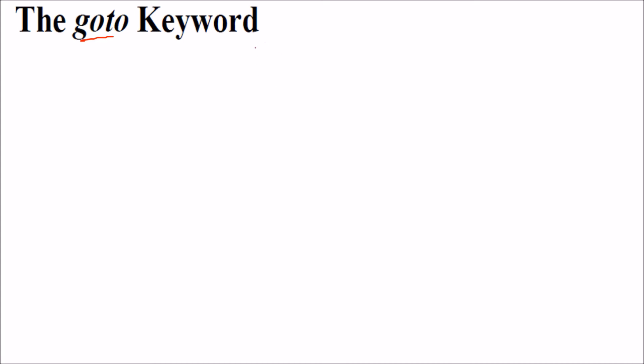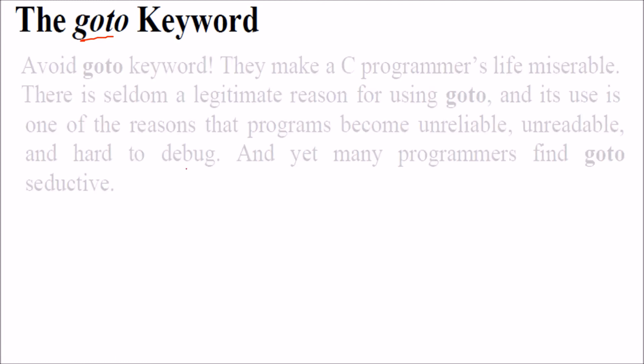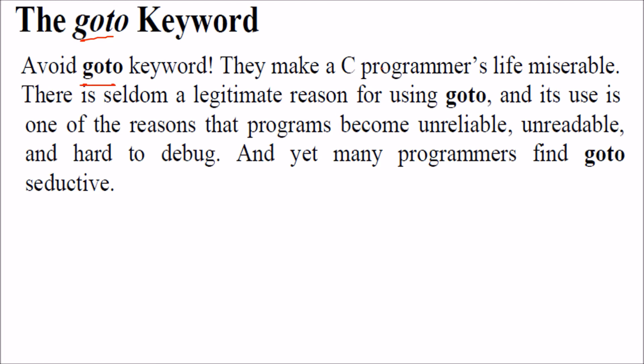The goto keyword takes your control to any part of the program. In MISRA C, MISRA C++, and various other programming standards and practices, they say don't use goto. Software disasters have been linked to programs containing goto. So goto should be avoided because it will make your program unreliable, unreadable, and very difficult to debug — though goto is often seductive to programmers.